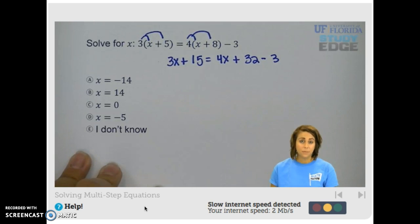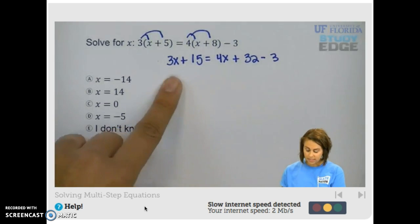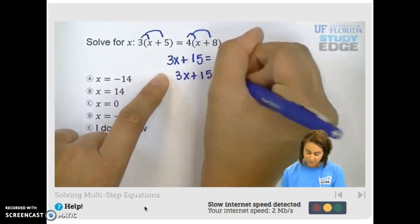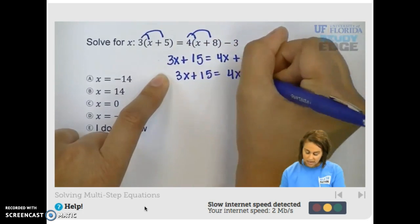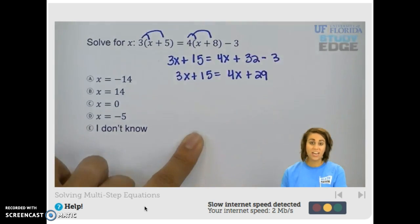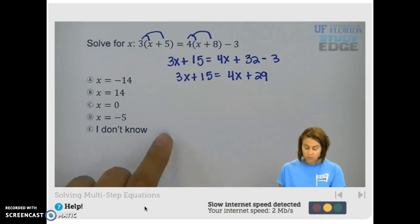Now we need to combine like terms. On the left-hand side, we're going to keep it just the same for now. And on the right-hand side, we're going to rewrite this, 32 minus 3, as 29. Now we have a couple of options.